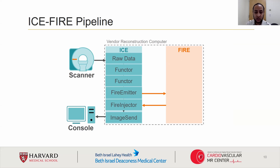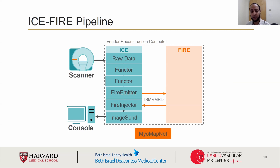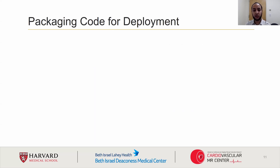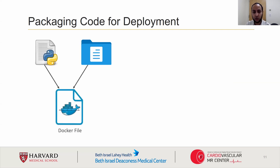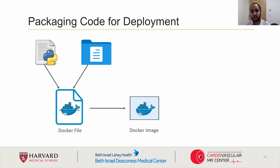All communication between the servers will be in ISMRMRD format. Once we have established a connection between the two servers, we can begin deploying MyoMapNet on the FHIR server. In order to package our program for deployment on the FHIR server, we need to first take all of our code and libraries and put them into a Dockerfile, which will be used to generate a Docker image that contains our code and the compiled libraries.